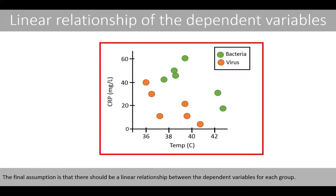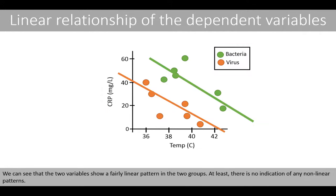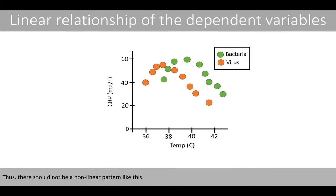The final assumption is that there should be a linear relationship between the dependent variables for each group. We can see that the two variables show a fairly linear pattern in the two groups — at least there is no indication of any non-linear patterns. Thus, there should not be a non-linear pattern like this, for example.